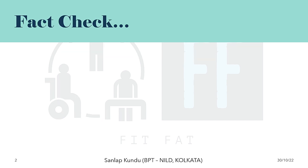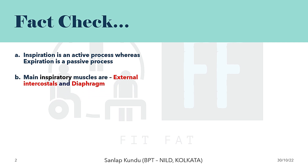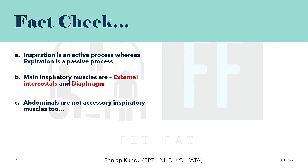The first thing we know is that inspiration is an active process, whereas expiration is a passive process. That means if inspiration is happening, expiration will happen automatically. The main inspiratory muscles are the external intercostals and diaphragm, and the abdominals are not included in the accessory inspiratory muscles either. That means they fall in the expiratory part — but as already noted, expiration is a passive process.